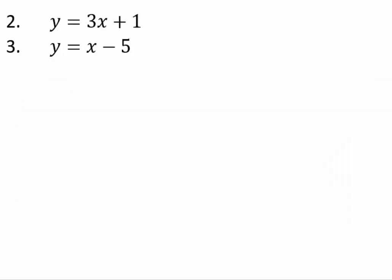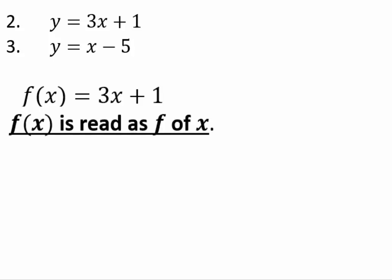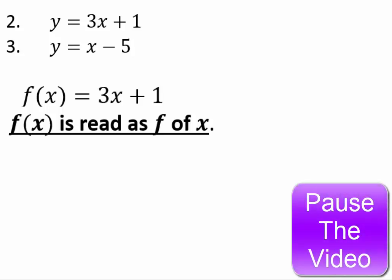To distinguish between the two y-coordinates, given that the input is x in both cases, you choose a small letter like f, g, or h — or a word — for the name of the function, and then write the input as the argument. So you write f of x equals 3x plus 1, and read that as 'f of x equals 3x plus 1' — not 'f times x.' Pause the video and see if you can come up with a notation for y equals x minus 5.